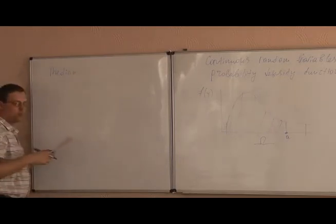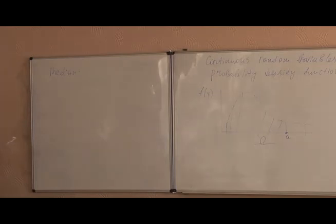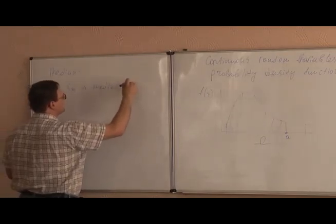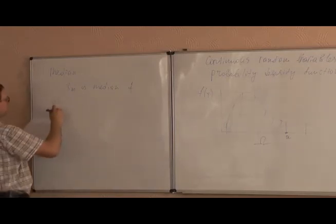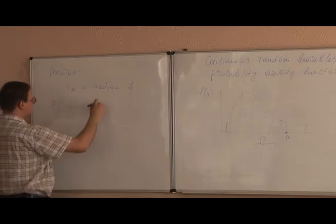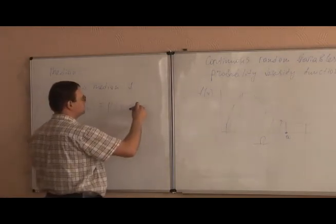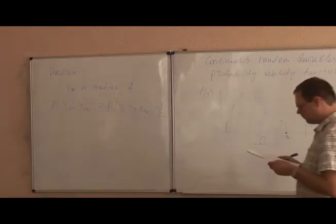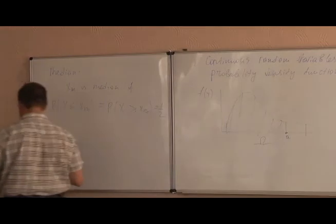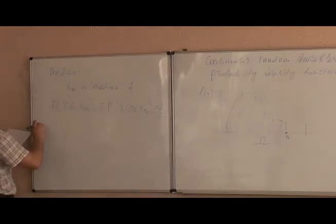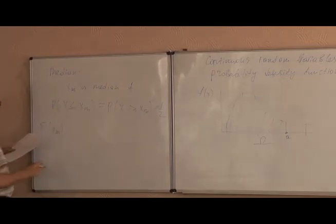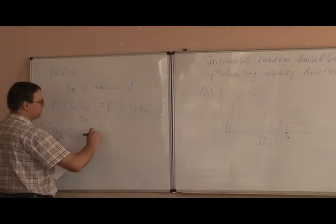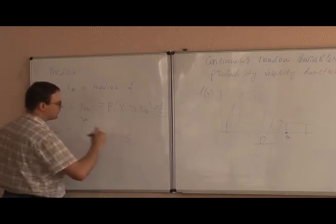Median is the observation which splits the entire distribution into equal halves. X_m is the median if the probability of X below this median equals the probability of X above this median, and both are equal to one half. Using the cumulative function, the cumulative function of the median is the integral from negative infinity to the median of the probability density function, equal to exactly one half.